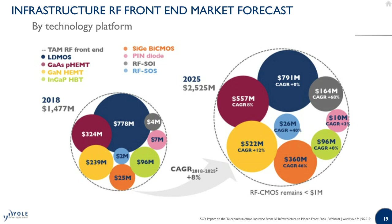In the end, the trend toward active antenna systems offers actual market perspectives for platforms such as gallium arsenide, silicon germanium, and RF silicon-on-sapphire. That's a good sign for the compound semiconductor industry in particular.